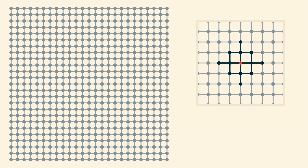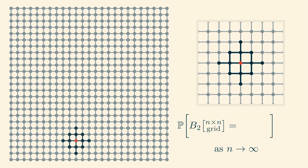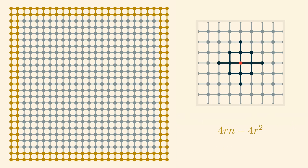On the right, we see the 2-ball around the origin in an infinite grid, and on the left we see a large finite grid. You can see that the 2-balls around a random vertex in the large finite grid mostly look the same as the 2-ball around the origin in the infinite grid. In fact, for any radius r, as the side length n of the finite grid goes to infinity, the probability that the r-ball around a uniformly random vertex in the grid is isomorphic to the r-ball in the infinite grid goes to 1. This works because the number of vertices within distance r from the boundary scales like n, whereas the number of vertices in the interior scales like n squared. So, for large enough n, there are far more vertices in the interior than near the boundary.